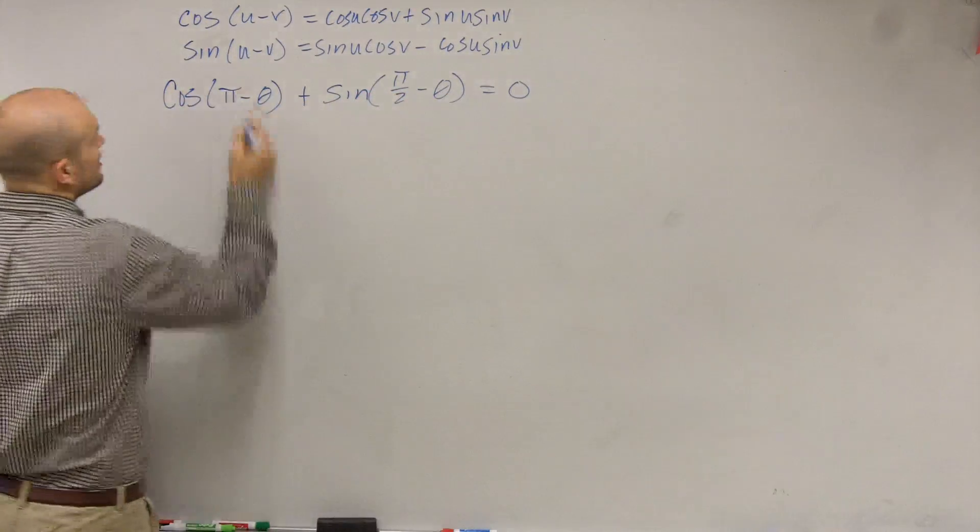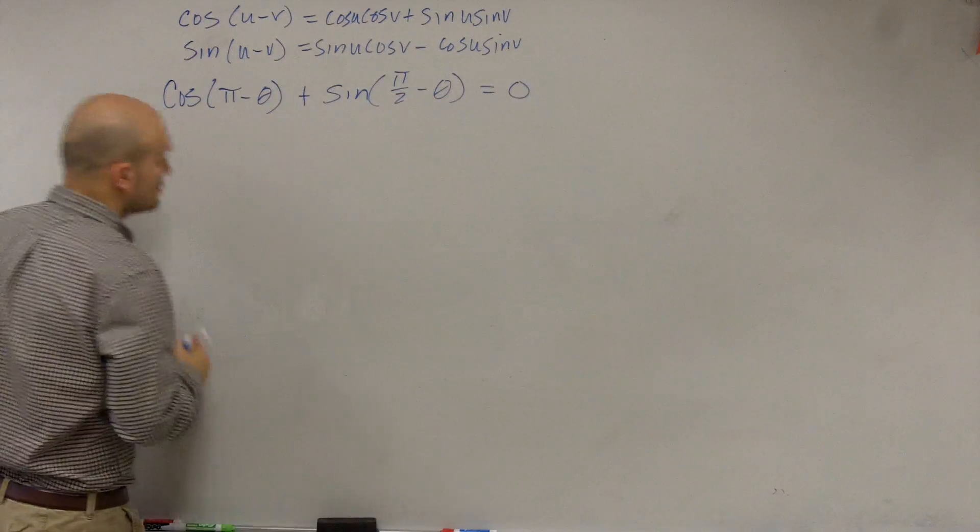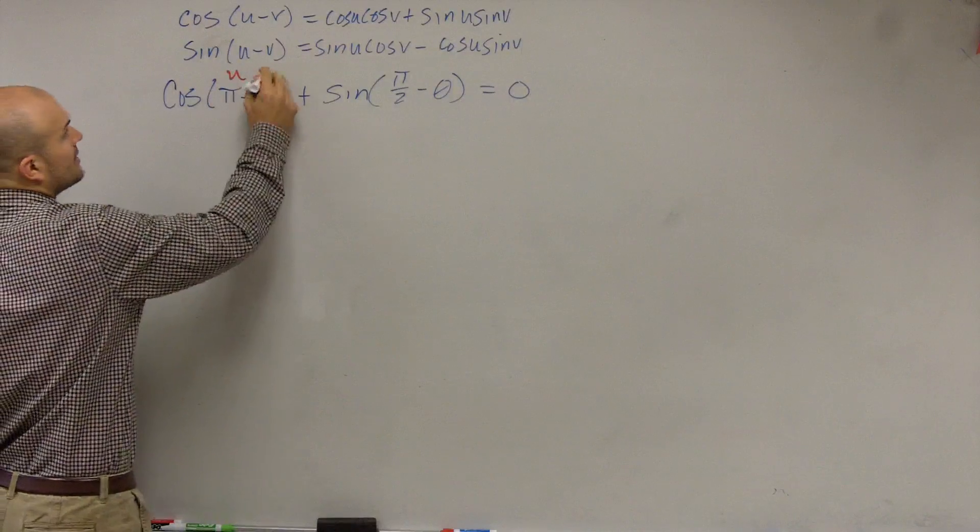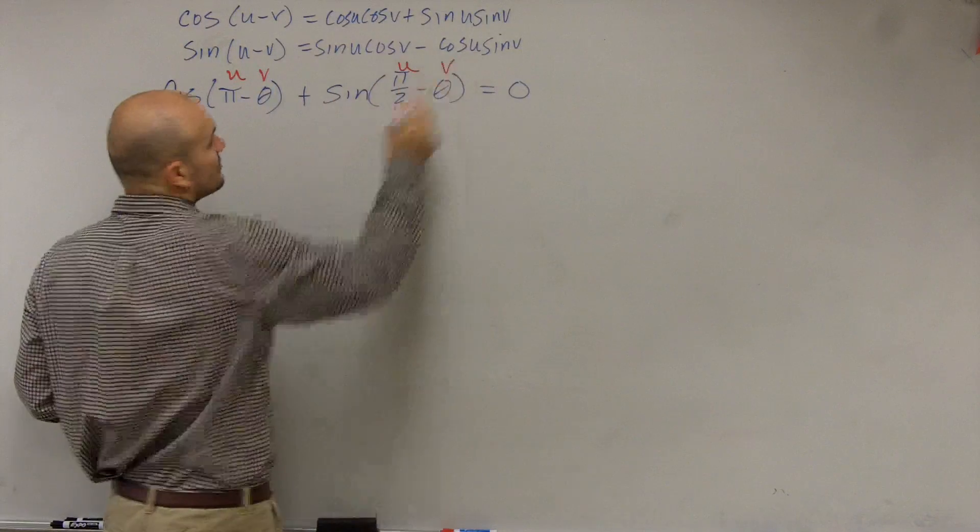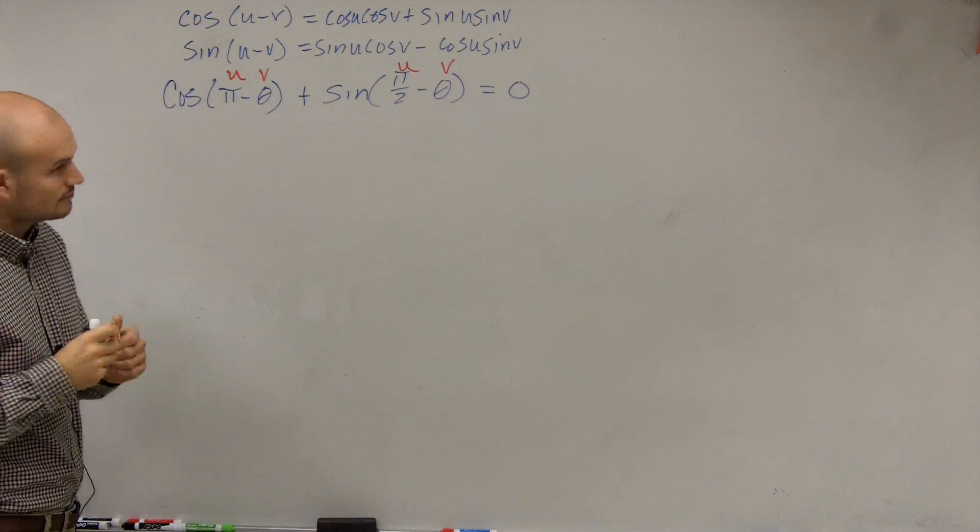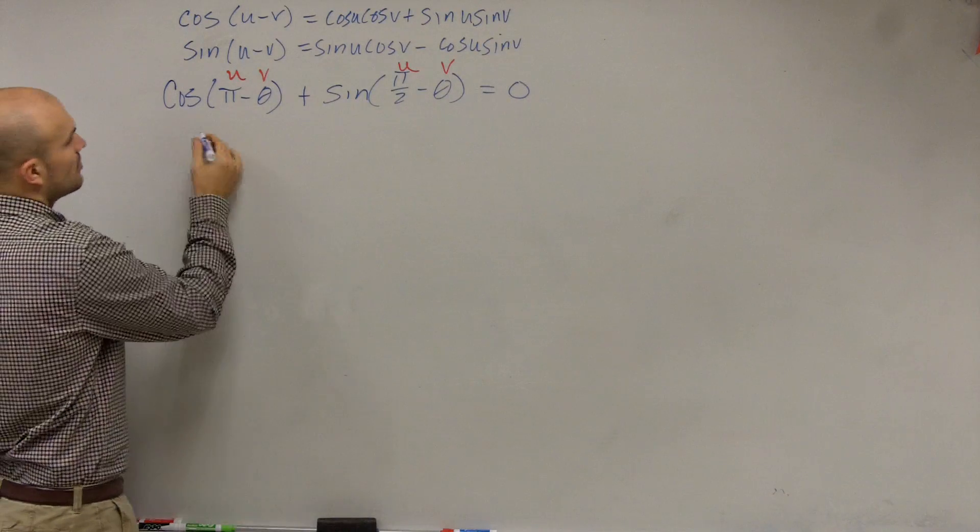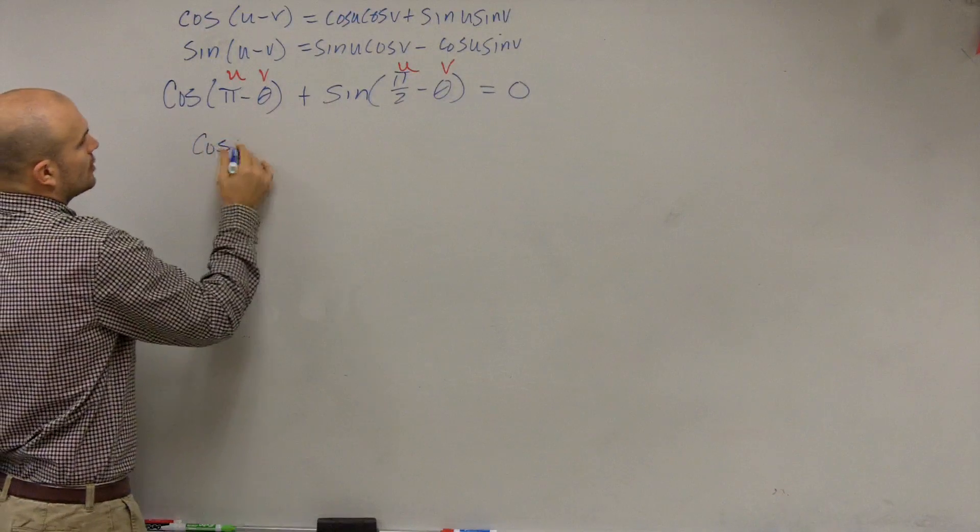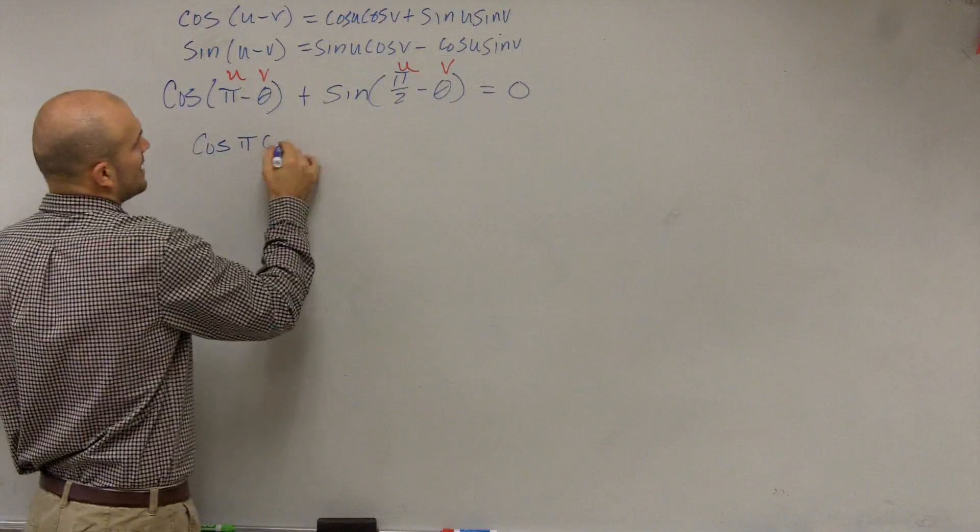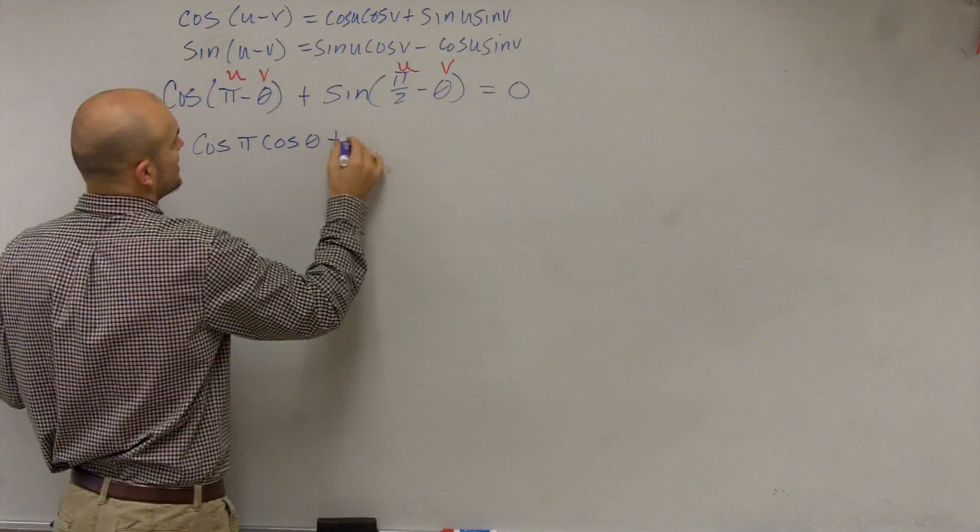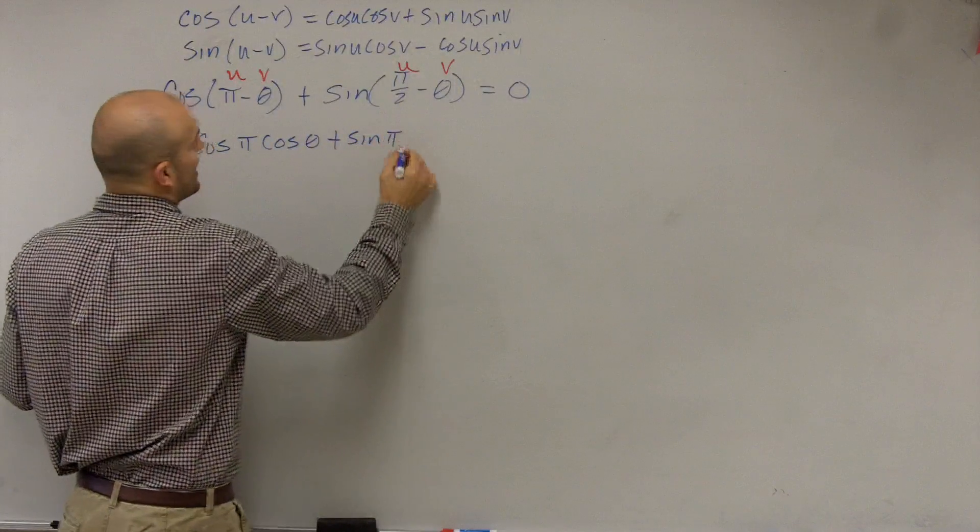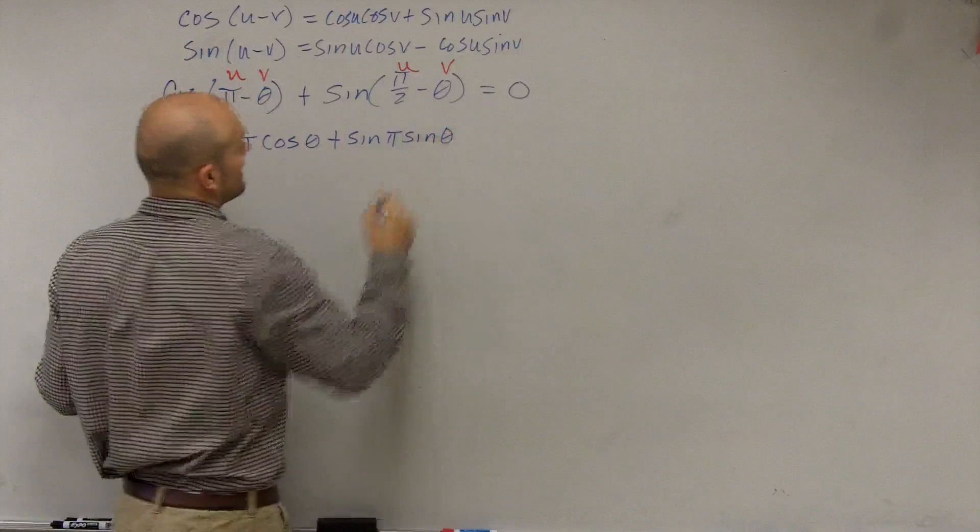So let's apply here. So I write here's u, here's v. Here's u, here's v. So by applying our formula, we're going to have cosine of pi times cosine of theta plus sine of pi times sine of theta.